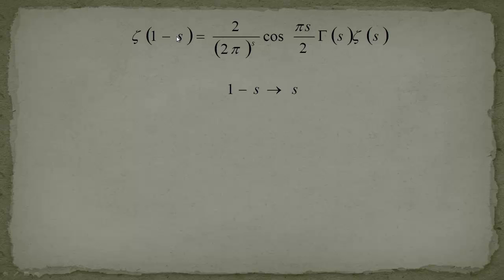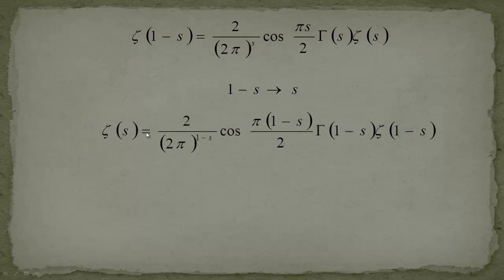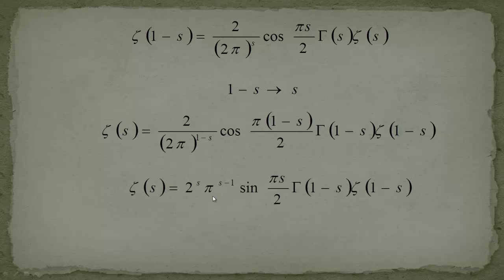We're not done yet — on the first slide we had a sine, not a cosine. To introduce the sine, we replace 1 minus s with s. So we get zeta of s equal to (2/(2π))^(1−s) times cosine(π(1−s)/2) times gamma(1−s) times zeta(1−s). Now cosine(π − π·s/2) can be converted using the complementary formula, giving us a sine.